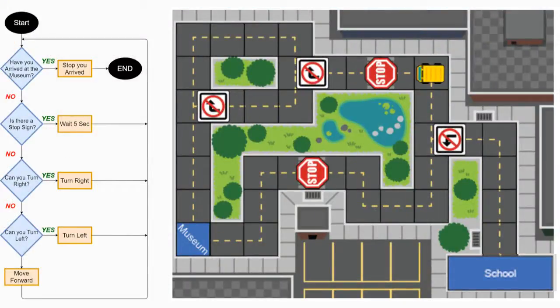Now that we've completed our universal algorithm, we've taken our bus and placed it at the top portion of the screen. If our algorithm runs correctly, we should be able to get that bus to navigate from its current location all the way to the museum using that universal algorithm. Go ahead and give it a shot — run your algorithm and see if it will get your bus to navigate to the museum.